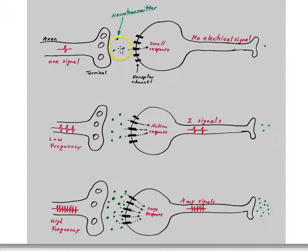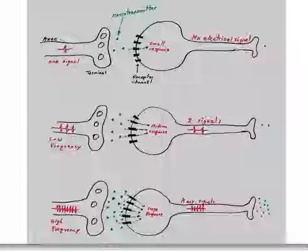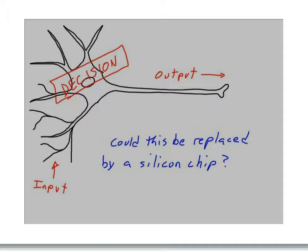For weak inputs, the target cell might not make an action potential at all. For medium input activity, it produces low-frequency action potentials. For high-frequency input, it produces a high-frequency response. The difference between not making anything and generating an action potential is the threshold. When input activity exceeds the threshold, the target cell generates an action potential. This is what we mean when we say neurons are making a decision — depending on the activity across all of its dendrites, the neuron metaphorically decides to make an output signal once that electrical threshold is exceeded.